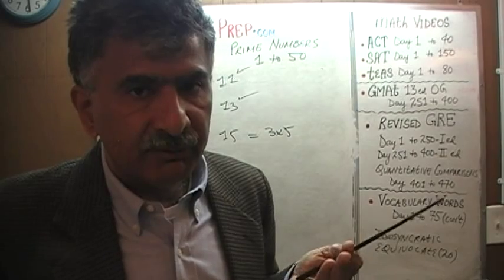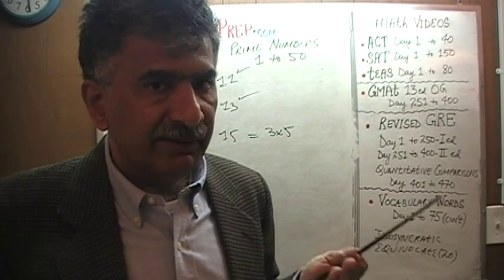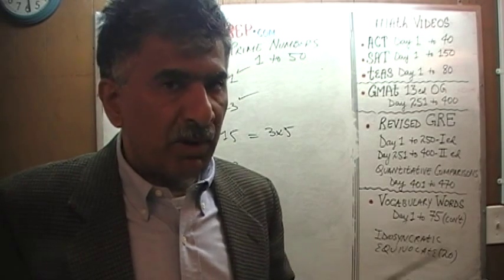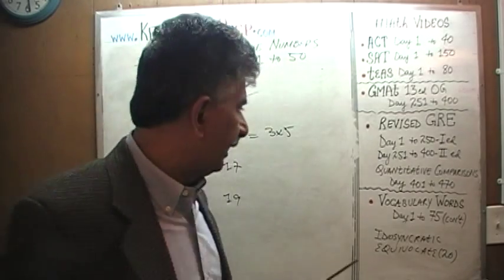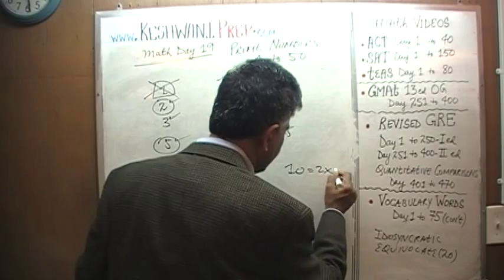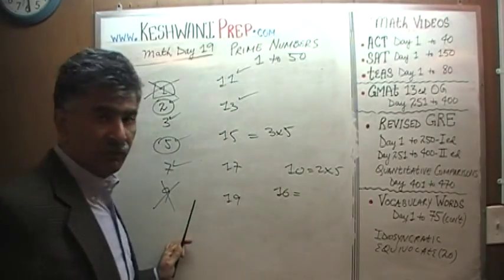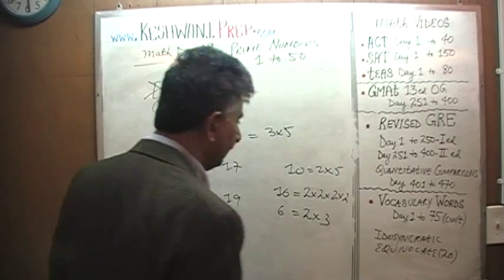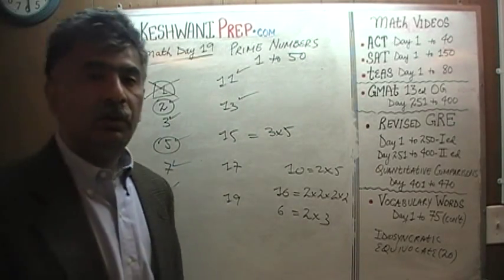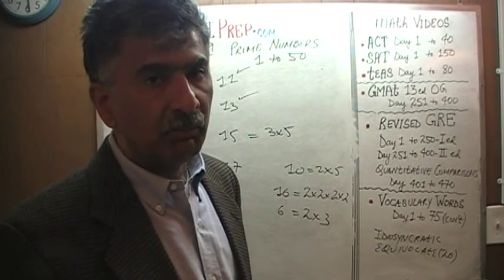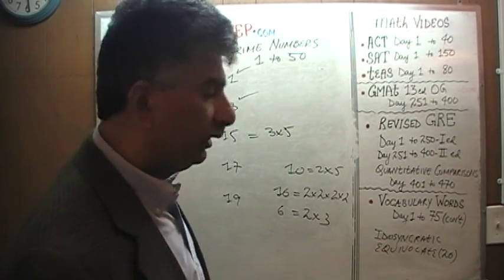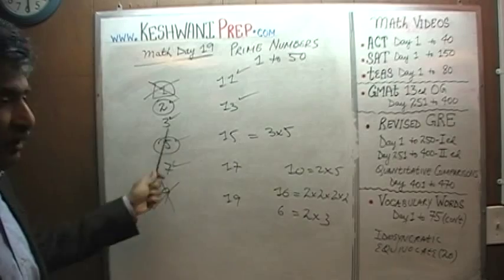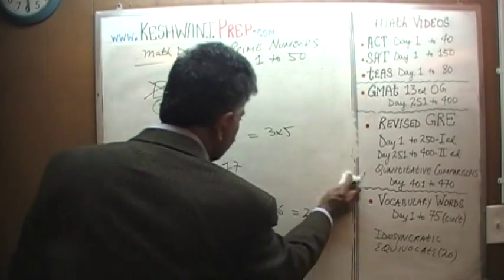Prime numbers are the building blocks. Think of prime numbers as atoms in chemistry. All the other counting numbers are composite numbers — they are made up of prime numbers. 10 is a composite number made up of 2 prime numbers. 16 is 2×2×2×2. 6 is made up of 2 and 3. In order to make sure a number is not prime, we have to make sure it is not divisible by any of the previous prime numbers. 15 is divisible by 3, therefore it is not a prime number.